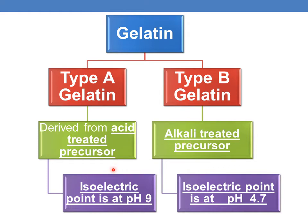One more difference is their isoelectric point. The isoelectric point is a pH at which a particular molecule does not carry any net charge. The isoelectric point of type A gelatin is at pH 9, whereas the isoelectric point of type B gelatin is at pH 4.7.